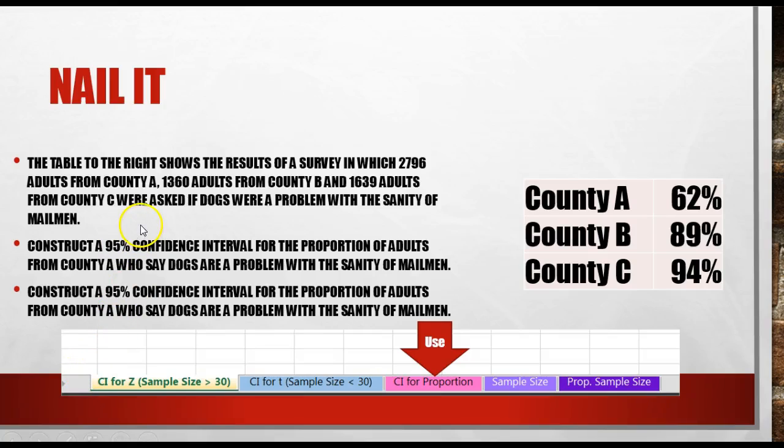Let's say we have the following situation. We've got a table to the right that shows the results of a survey in which 2,796 adults from County A, 1,360 adults from County B, and 1,639 adults from County C were asked if dogs were a problem.